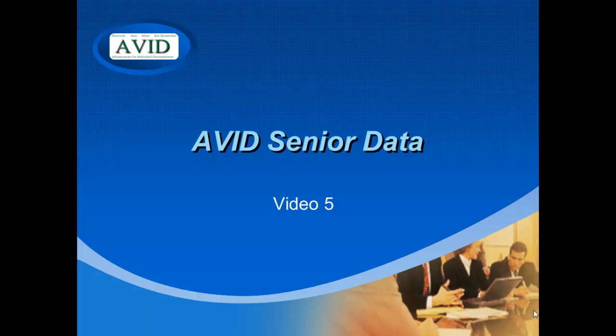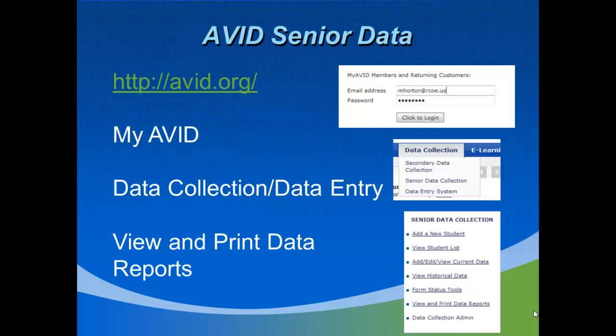The most recent graduate data is found in the senior data report. This data comes from the exit survey that AVID seniors take at the end of their 12th grade year. To access the senior data, go to avid.org and click on My AVID in the top right corner. Log in with your email address and password, and on the homepage, hover over Data Collection and then click Data Entry System. I'll show you right now.